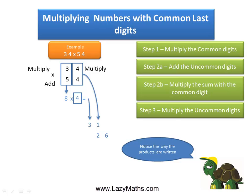Lastly, we multiply 3 and 5 together — the uncommon digits together. 3 times 5 is 15. We write 15 again in the carryover position.